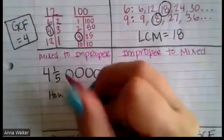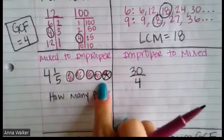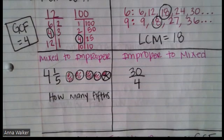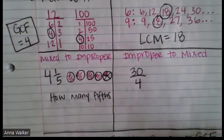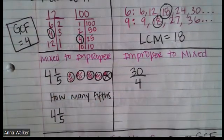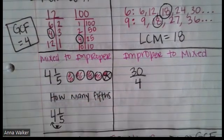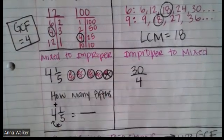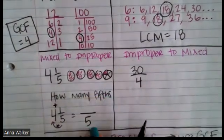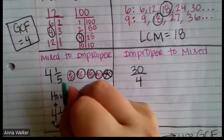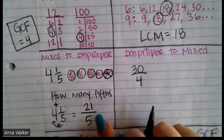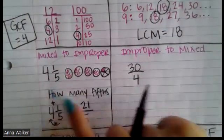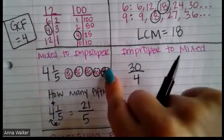If we were to represent four and one fifth visually, we'd have four wholes and then one fifth of another whole. To break it down into how many fifths that is, the trick is to multiply the denominator times the whole number and then add the numerator — keeping the denominator the same. So four times five is 20, plus one is 21. There are 21 fifths in four and one fifth, so four and one fifth is equivalent to 21 over 5.